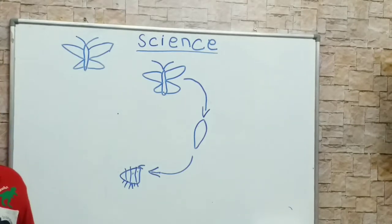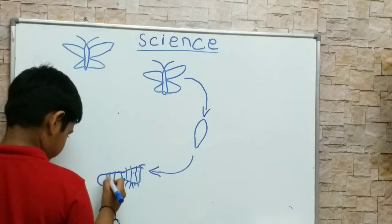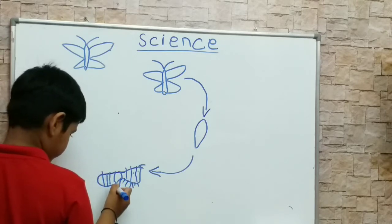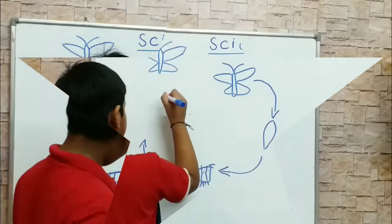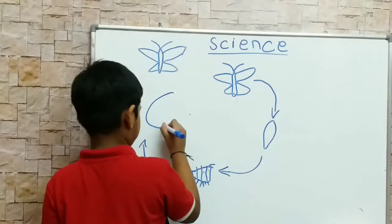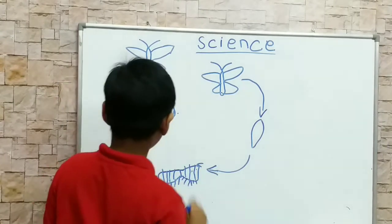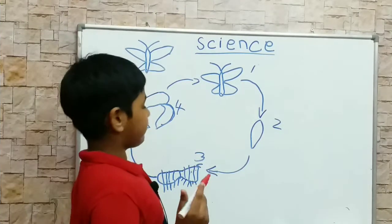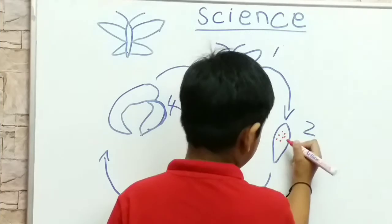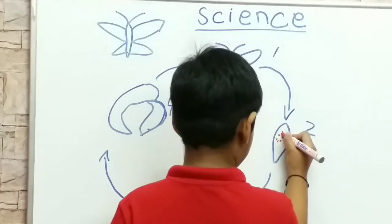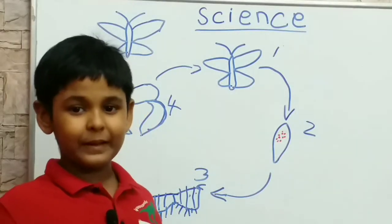So this is a caterpillar. Now I write the red eggs: one egg, five egg, six egg, seven, eight egg, nine egg, ten eggs, eleven eggs. So there are eleven eggs on it.